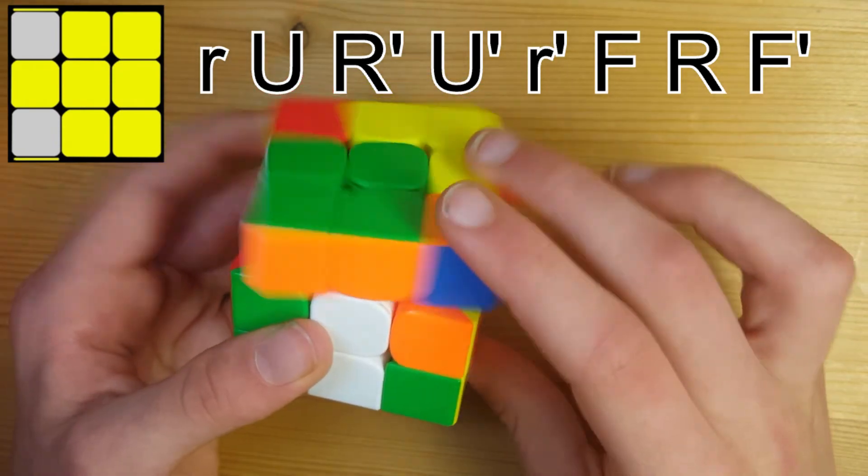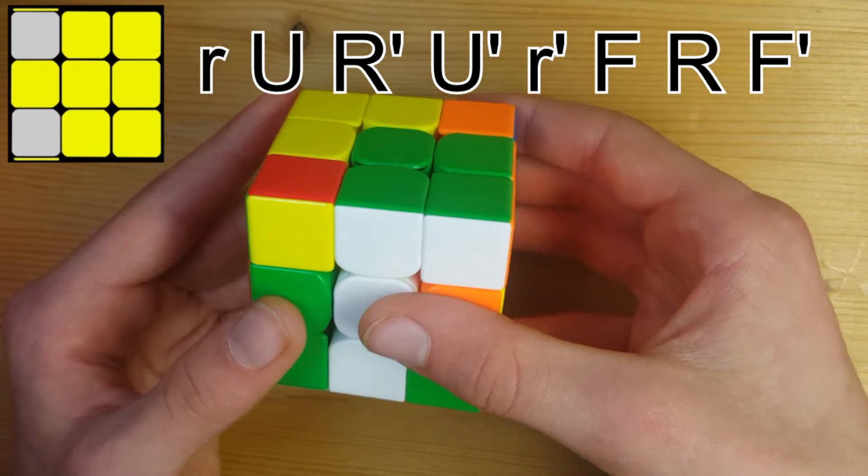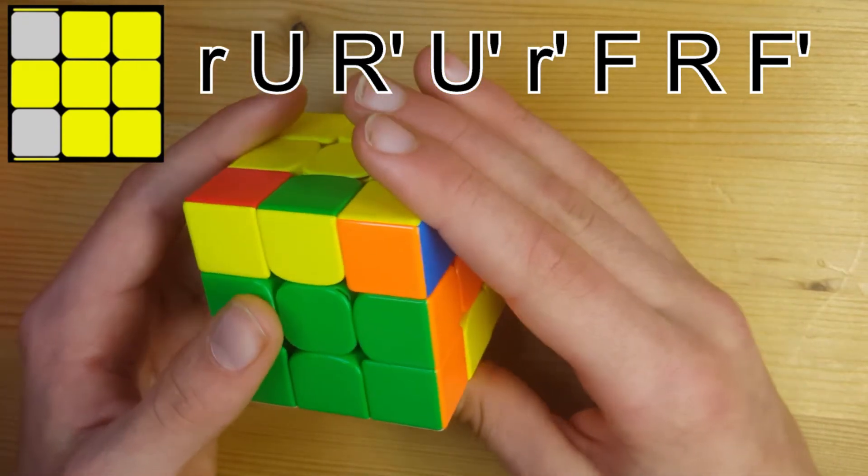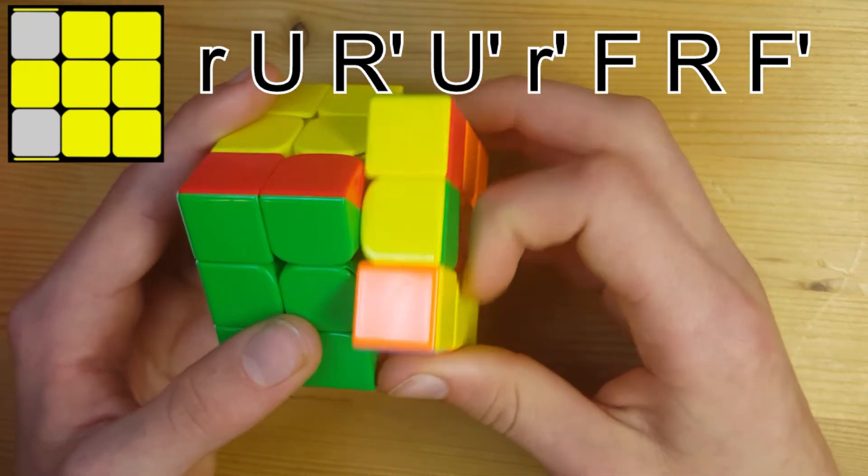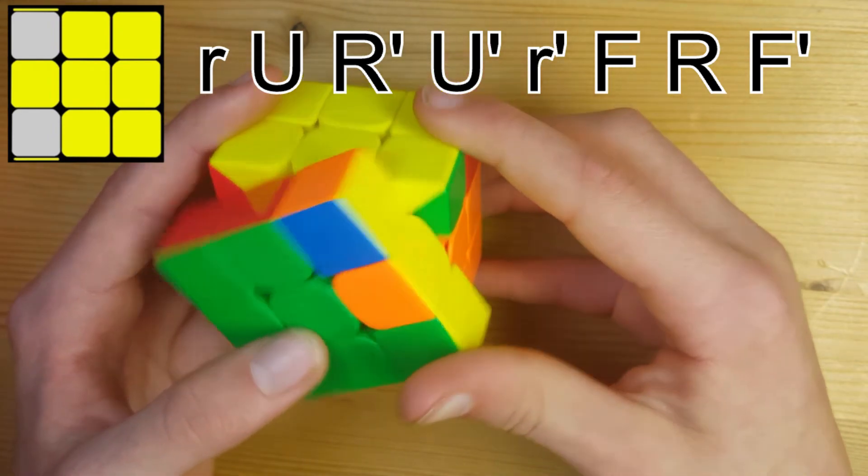Move this side over, bring this side down, bring this side over, and then you're going to bring both of these layers back down and you're going to do an F move. Then you're going to bring this side up and then undo that F move.